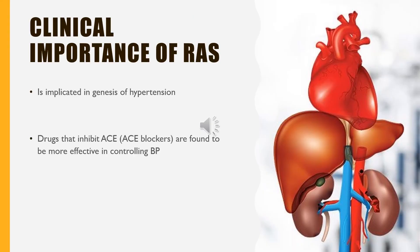The importance of the renin-angiotensin system: RAS is implicated in the genesis of hypertension. Renin increases angiotensin formation, which causes intense vasoconstriction that in turn increases blood pressure. So, whenever renin secretion is high, it invariably increases BP. This is the important physiological basis of renal hypertension. In the treatment of hypertension, drugs that inhibit ACE — that is, ACE blockers — are found to be very effective in controlling BP compared to other groups of drugs.